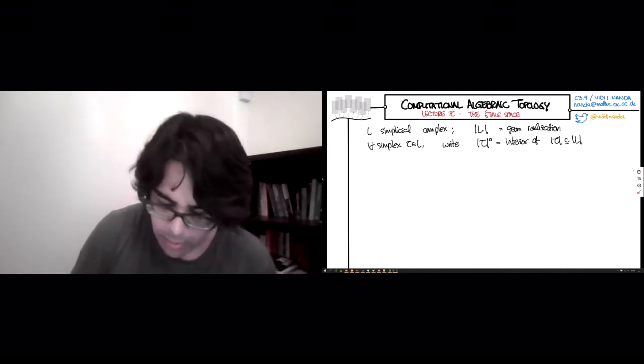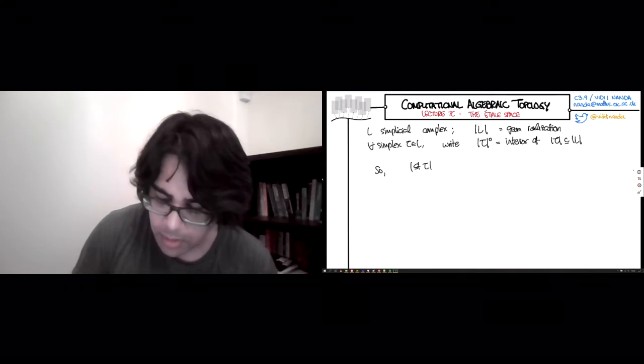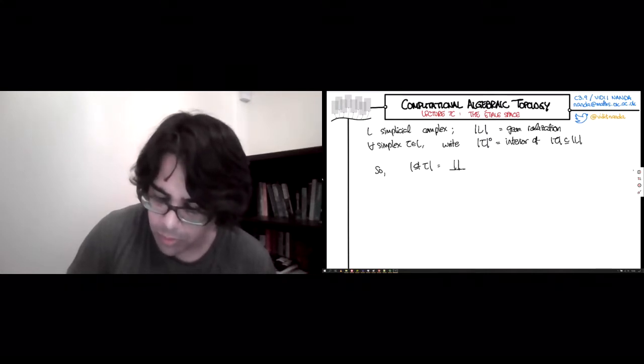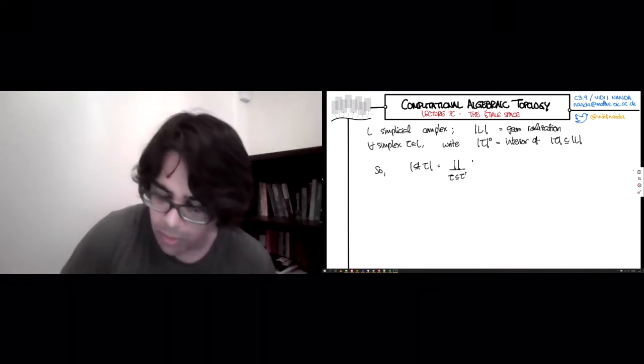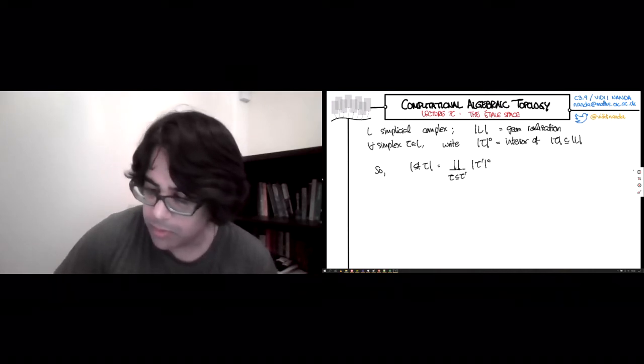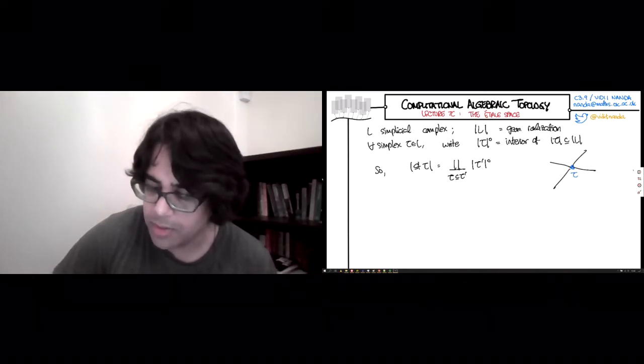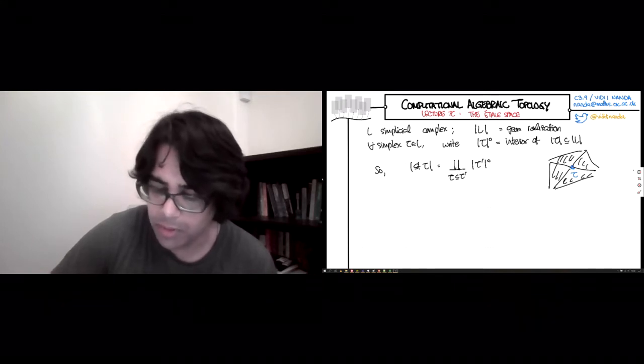And now the realization of the star is going to be the disjoint union over all the simplices that are bigger than tau of their interiors. So if tau is this vertex, then its star is going to be all the edges and all the two simplices and so on. The open two simplices, so the boundary will not be included.